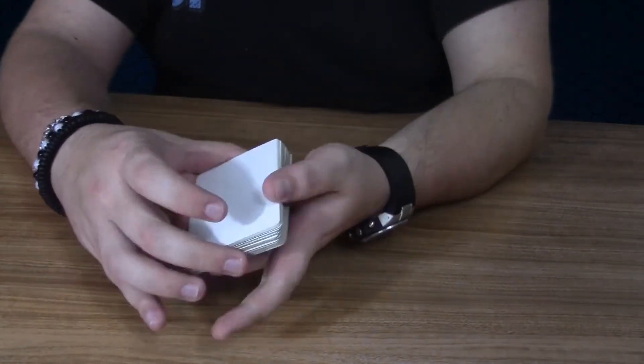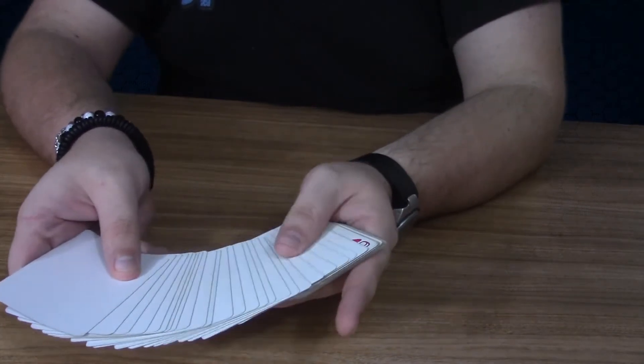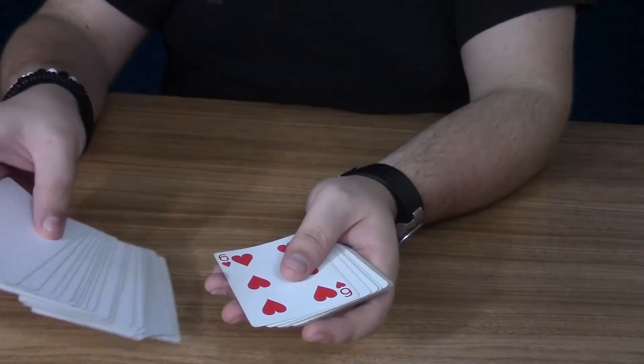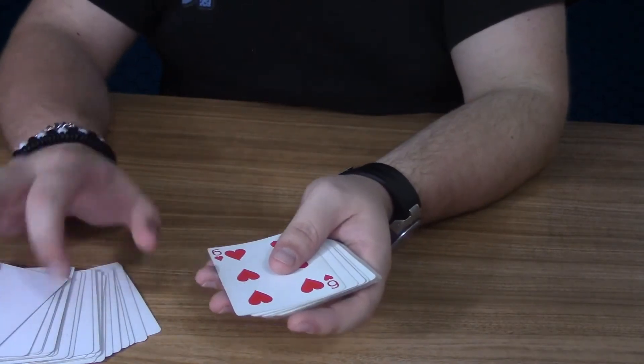So when you flip it over, all of those cards are now blank. You can spread through because all these cards are the ones that you just put on bottom. All right, you set those aside. Don't let them see the backs of those.